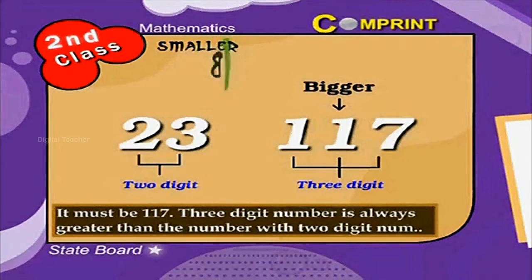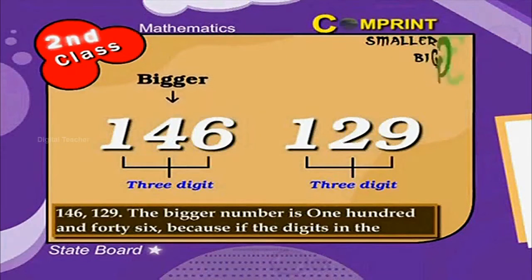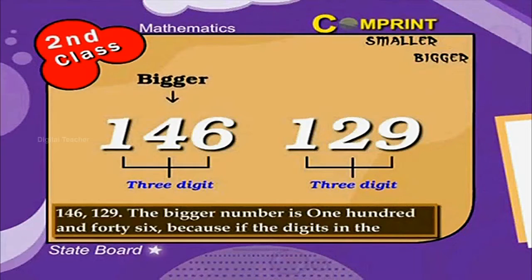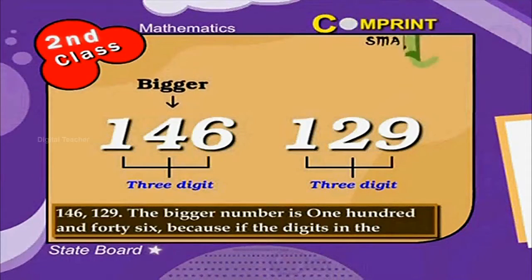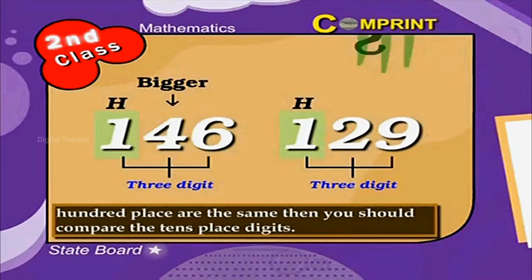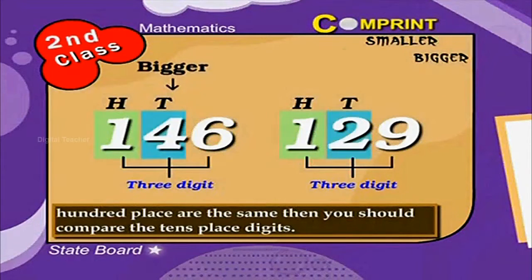Then what about these numbers? 146, 129. The bigger number is 146. Because if the digits in the 100th place are the same, then you should compare the 10th place digits.